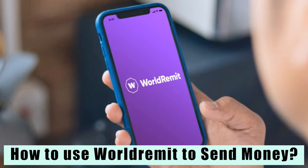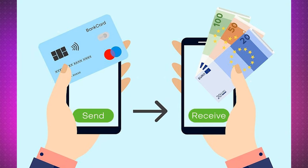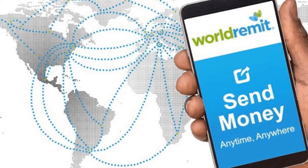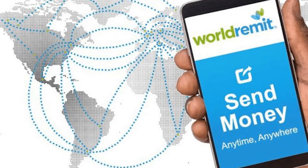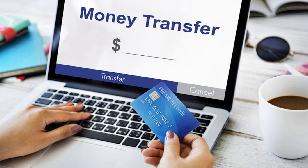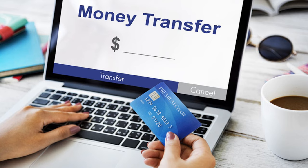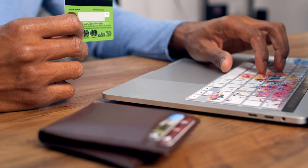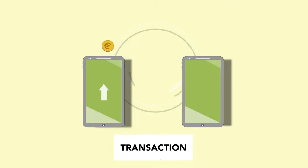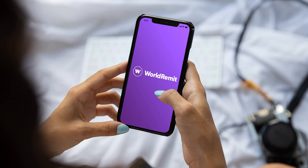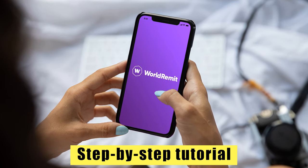How to use WorldRemit to send money? WorldRemit is one of the alternatives offered in the market for sending money. It is an online service that offers you the possibility of making international transfers through a cell phone or a computer. To use WorldRemit you have to download the application or register on its website, fill in the information that will be requested, and finally pay for the shipment. You can send money online to more than 140 countries. In this video we will teach you how to use the WorldRemit application through a step-by-step tutorial.